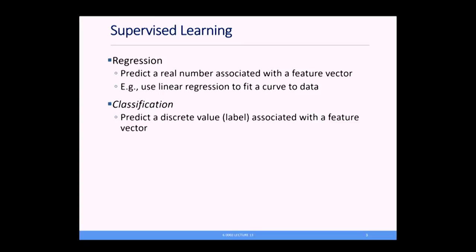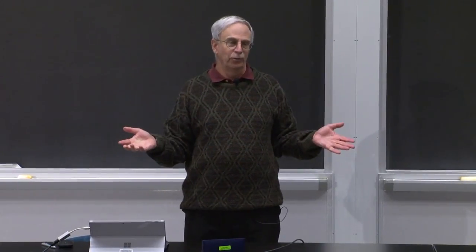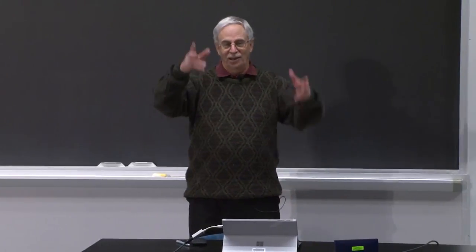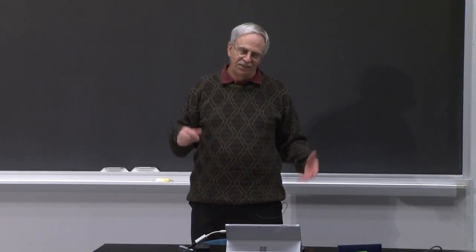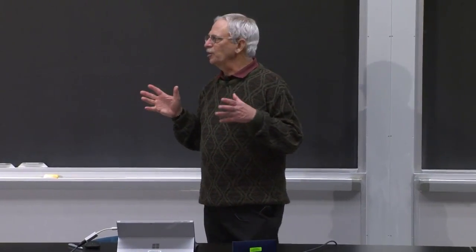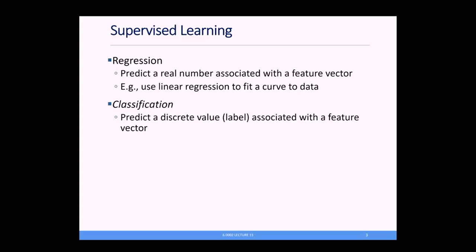Today we're going to look at classification. Last Monday we looked at unsupervised learning. Today we're looking at supervised learning, which can usually be divided into two categories. Regression, where you try and predict some real number associated with a feature vector — something we've already done back when we looked at curve fitting and linear regression, which was exactly building a model that, given some features, would predict a point.